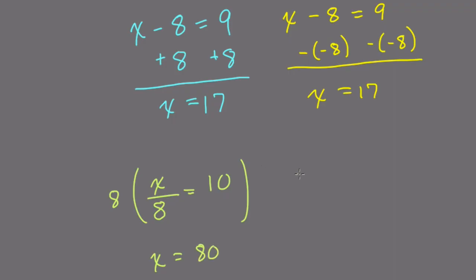Also though, we could, and this would be confusing I do agree with that, but we could divide both sides by 1 eighth. Dividing by 1 eighth means you're multiplying by 8, right? Divide by a fraction, you multiply by the reciprocal. And that would get you the same result, that x equals 80.